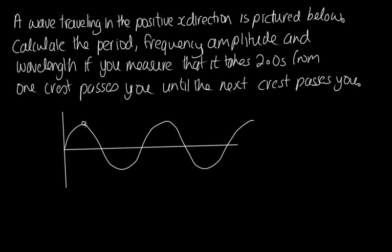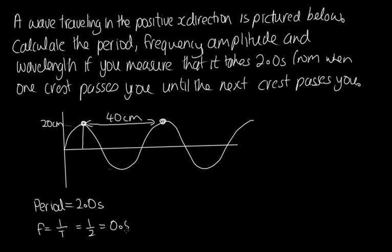So the frequency is equal to 1 over the period. And here's the diagram showing the wave. So we know that the period is equal to 2 seconds as it takes 2 seconds from when one crest passes you to when the next crest passes you. So the frequency is equal to 1 over the period, so that's 1 over 2, which is equal to 0.50 hertz. The wavelength is equal to the distance between the two crests, so that's 40 centimeters, which is 0.40 meters. And the amplitude is the displacement from equilibrium, so that's this 20 centimeters. So the amplitude is 20 centimeters, which is 0.20 meters.